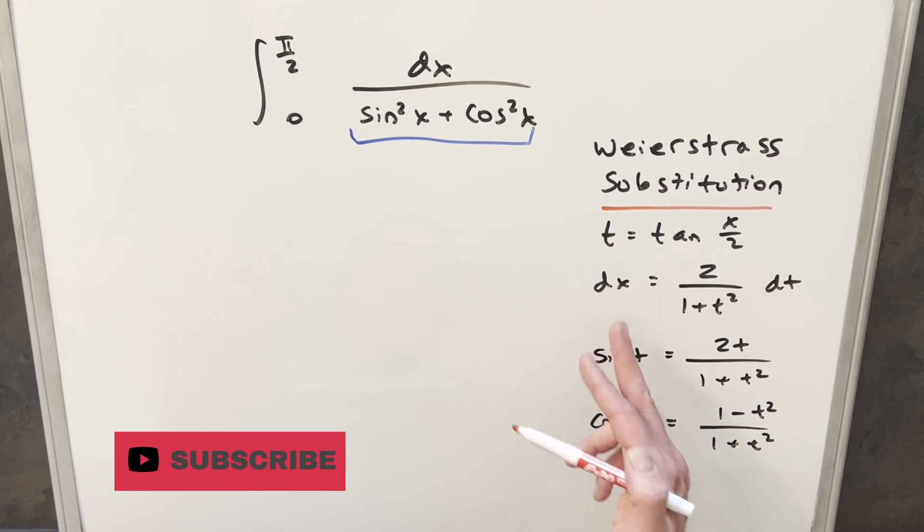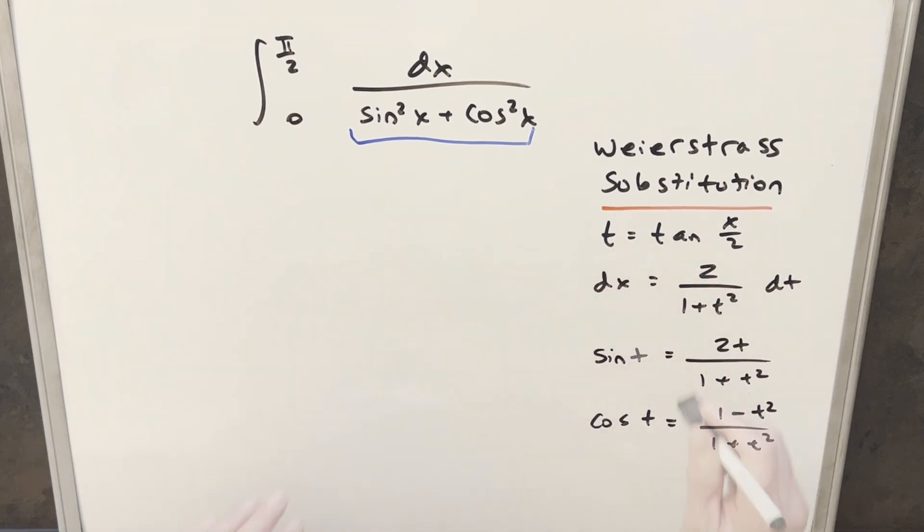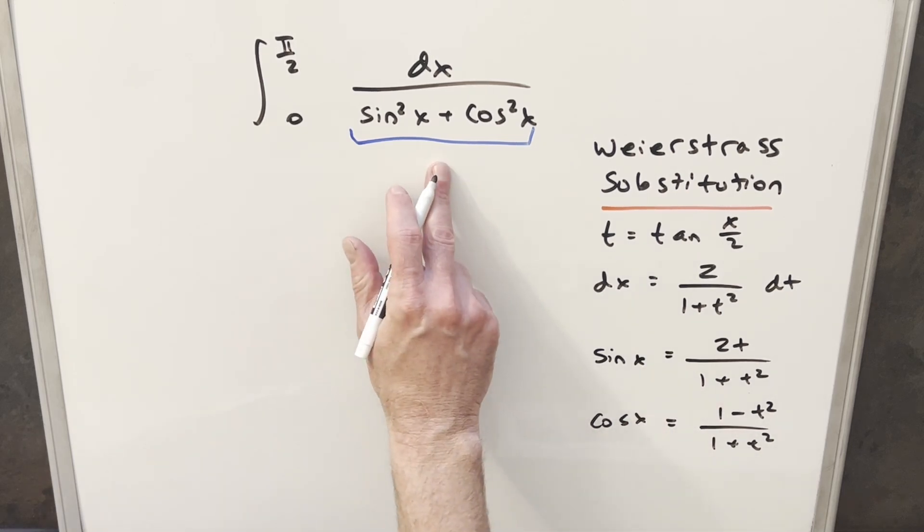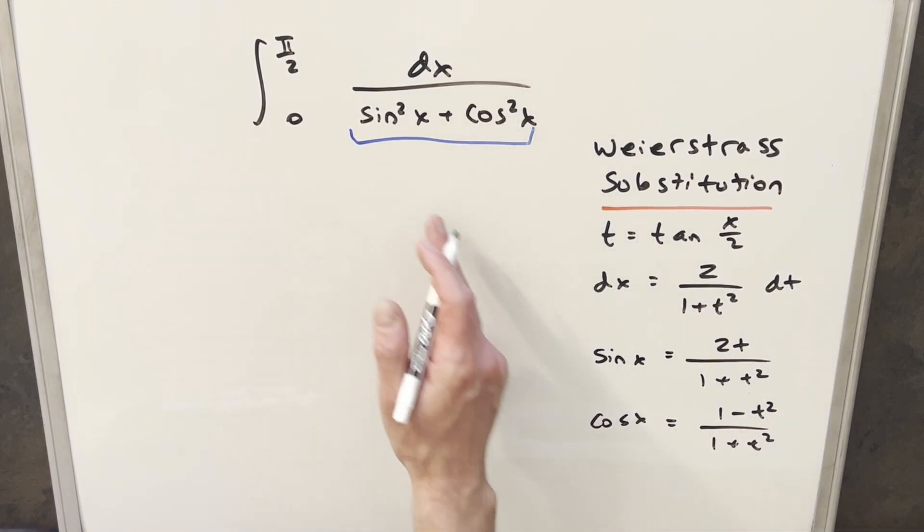We've got our value for sine, cosine. The value for dx is pretty easy to get from just our initial substitution. Let me fix this over here because this should just be x's here because we want values for x's in order to do this with our integral. We need a value for dx, we need a value for sin x and cos x.